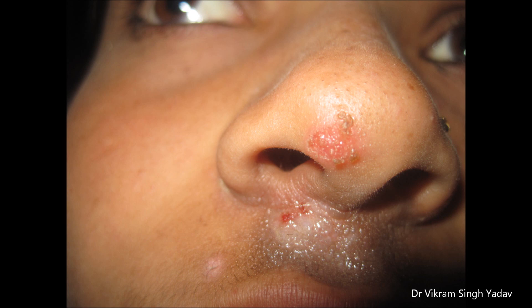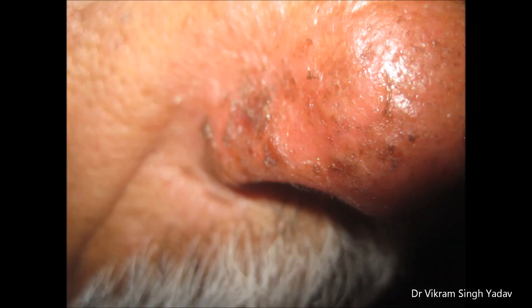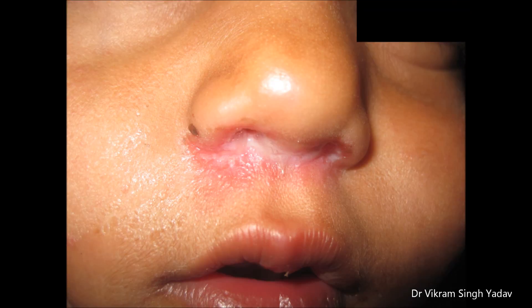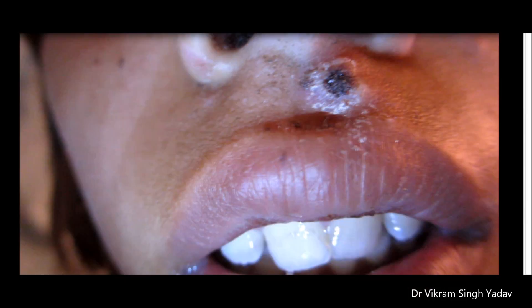Any sort of infection in this region can spread to the brain via the veins and can cause thrombosis of the cavernous sinus or meningitis. Inside the cavernous sinus, there are many important nerves, including those related to the eyes.